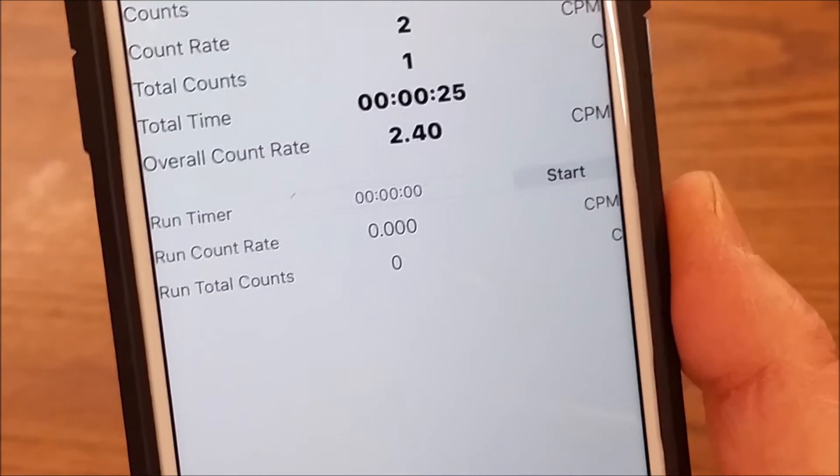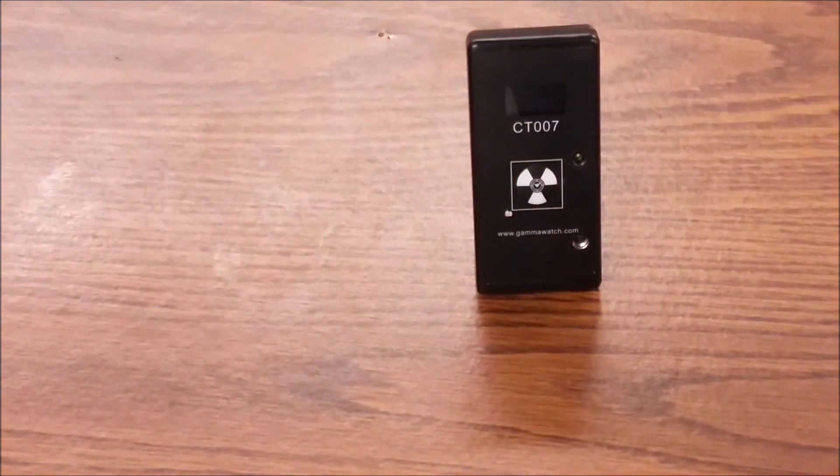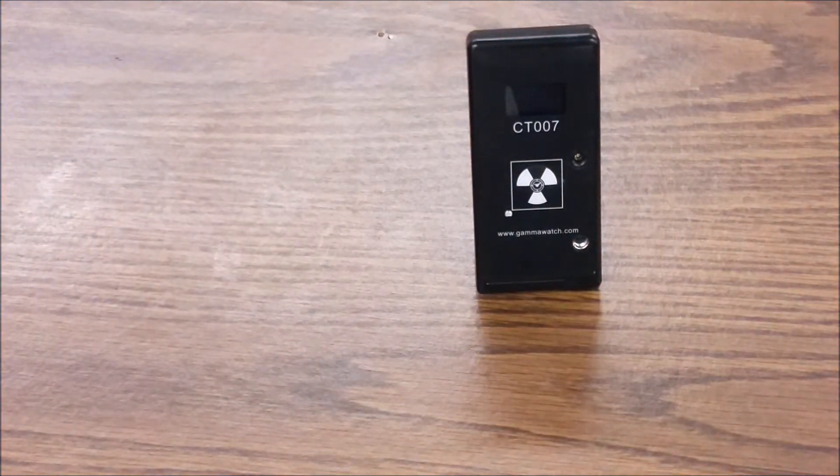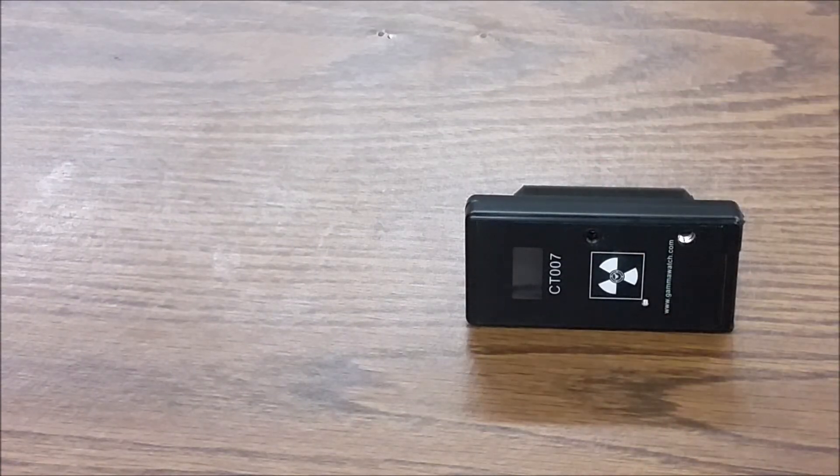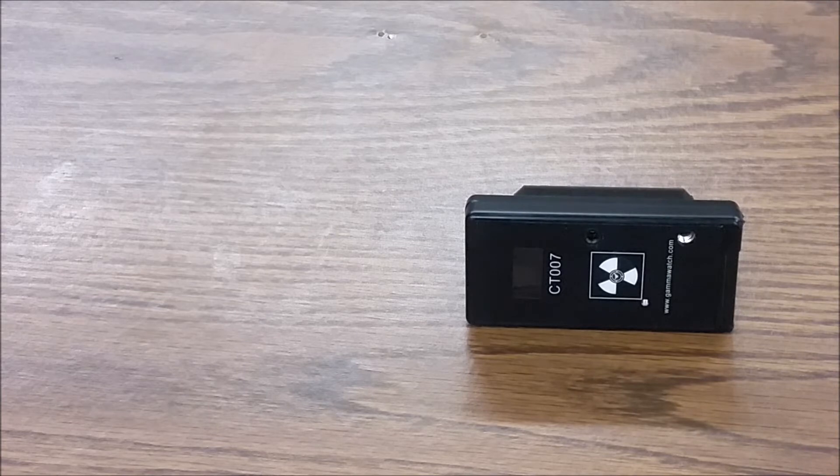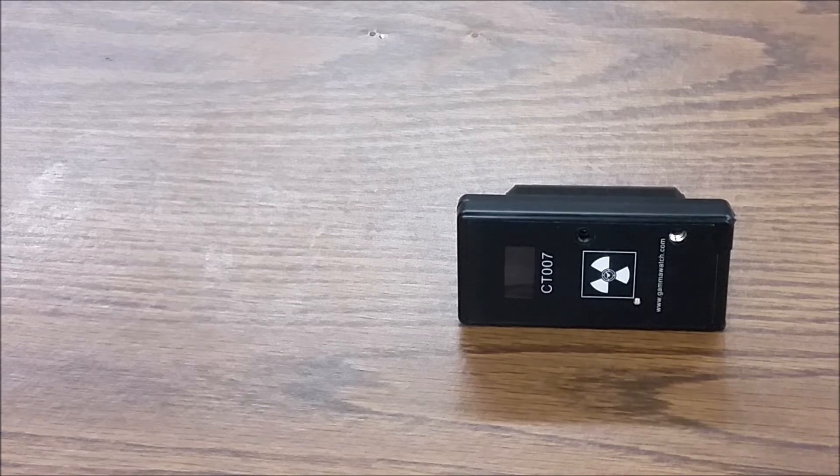So what we'll do is we'll set the scaler to 30 minutes and that way we're going to get better statistics. What we'll do is we'll lay the detector flat and we'll do a 30 minute count and then we'll cover it in borax and what the borax does is it'll absorb all the thermal neutrons.